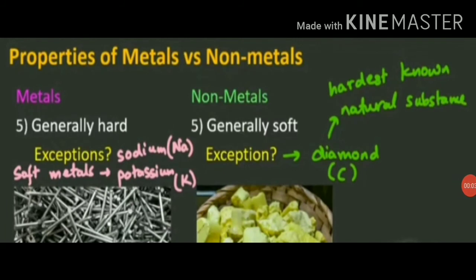Metals are generally hard whereas non-metals are generally soft. Iron metal is very hard and strong, and is used in the construction of bridges, railway lines, machines, etc. Exception: sodium and potassium are soft metals and can be easily cut with a knife. Non-metals are not hard or strong; they easily break when a large weight is put on them. Exception: diamond, a form of carbon, is the hardest naturally occurring substance.